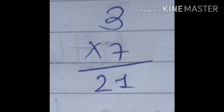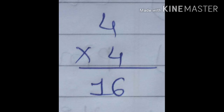Let's see number 4: 4 multiply 4. So we have to recite the table of 4. Four ones are 4, four twos are 8, four threes are 12, four fours are 16. So the answer is 16. You can see the answer is 16.